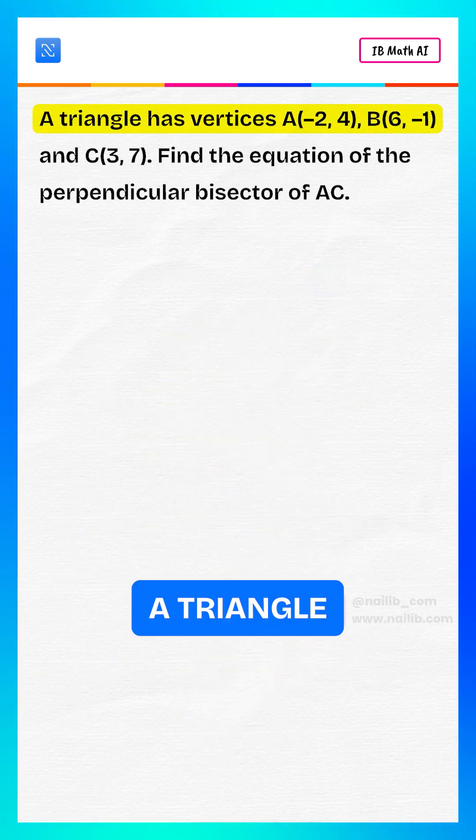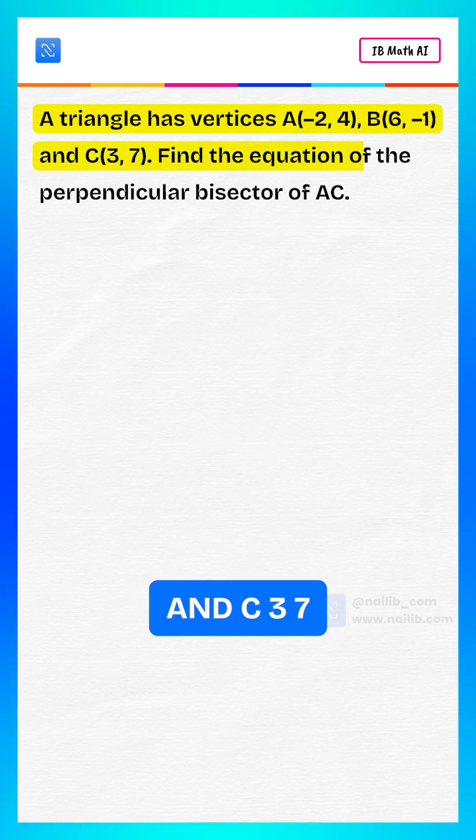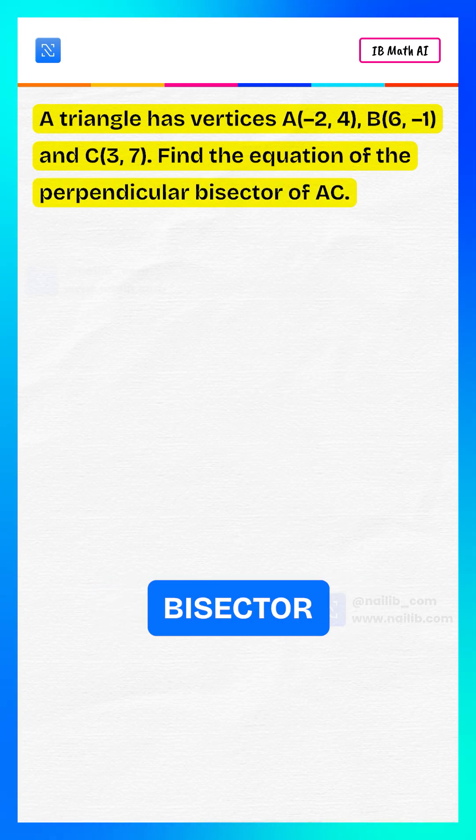A triangle has vertices A(-2, 4), B(6, -1), and C(3, 7). Find the equation of the perpendicular bisector of AC.